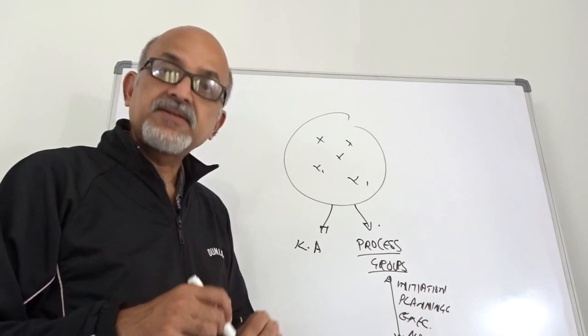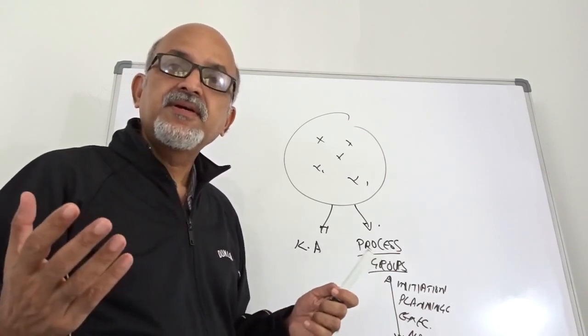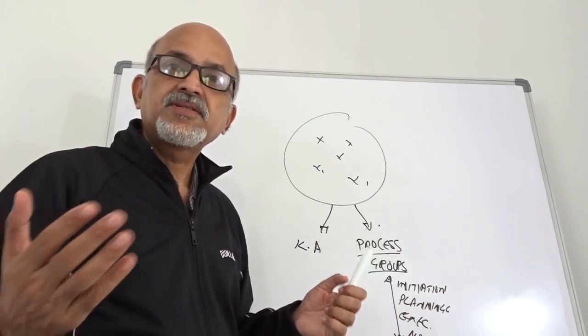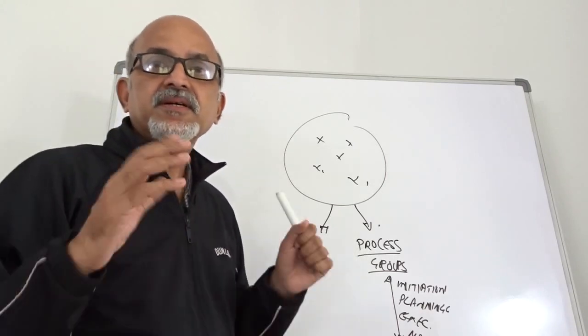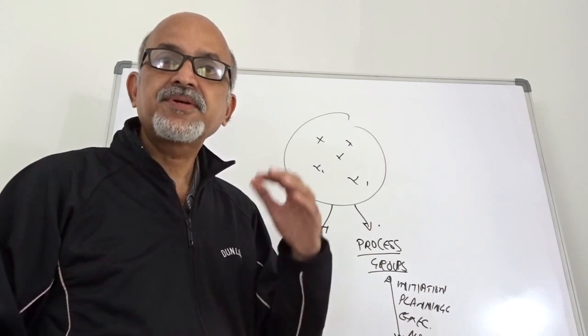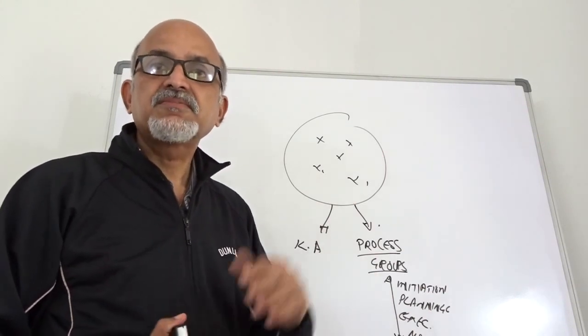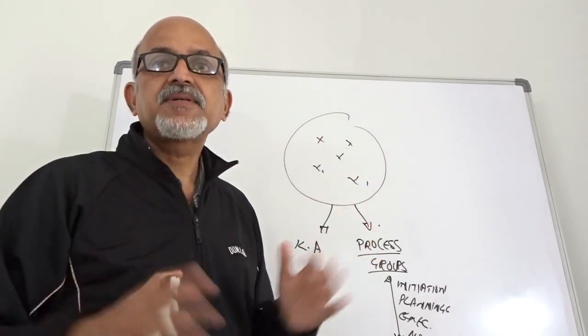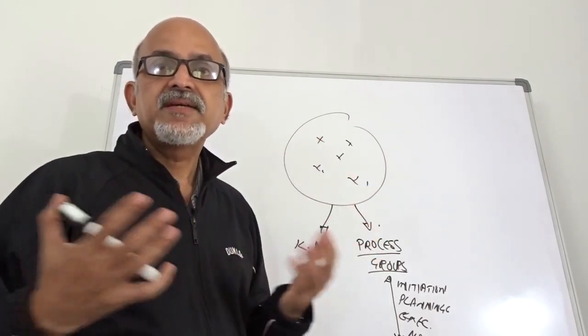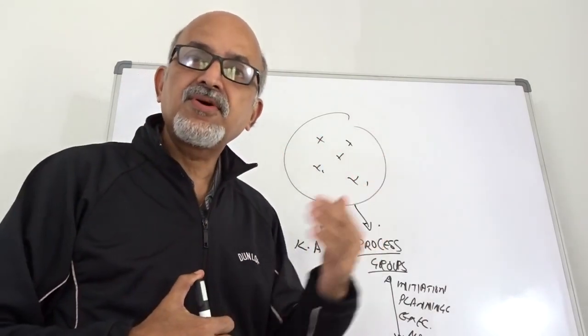The ten knowledge areas comprise integration management, scope management, time management, quality management, communications, risk, procurement, human resource, and stakeholder. These are discrete chapters in the PMBOK and don't give the natural flow of a project.